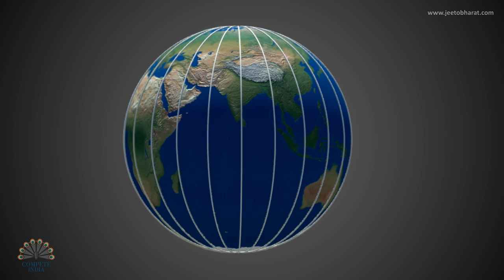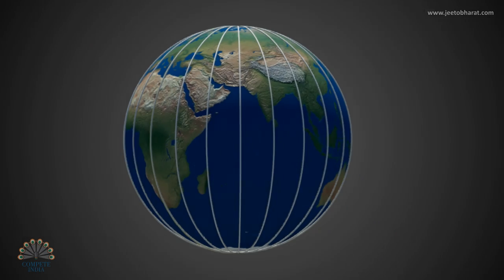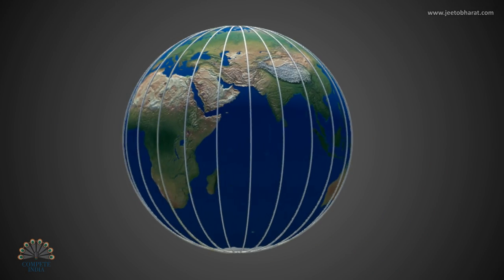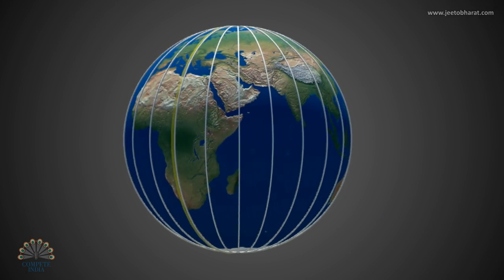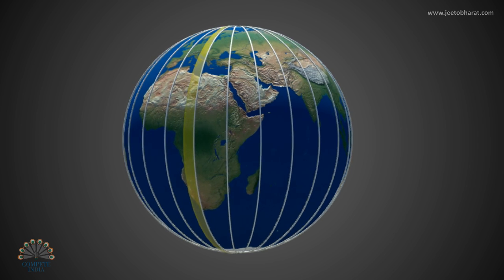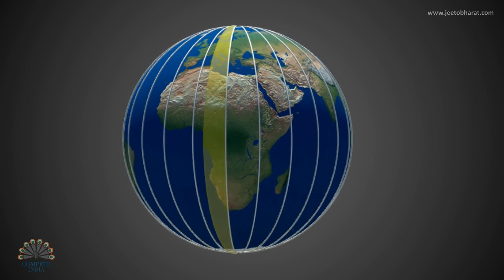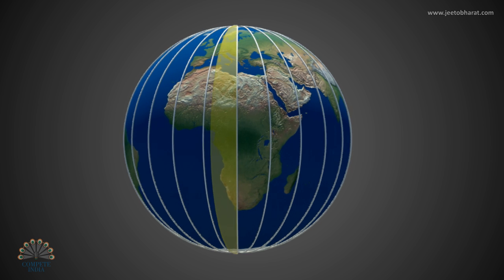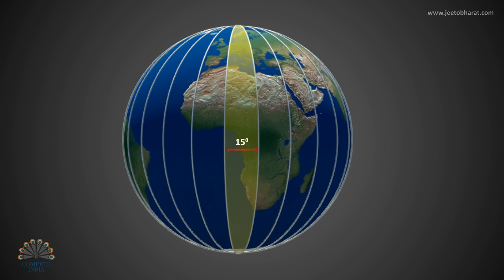Since the Earth rotates once every 24 hours and there are 360 degrees of longitude, each hour the Earth rotates one 24th of a circle, or 15 degrees of longitude.